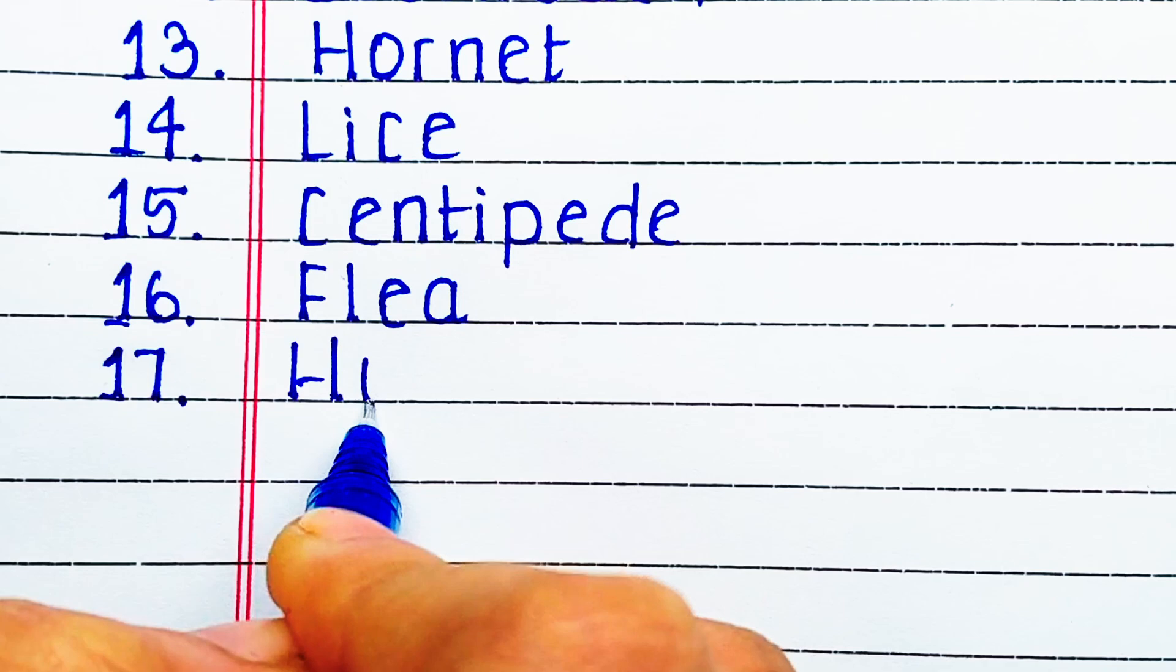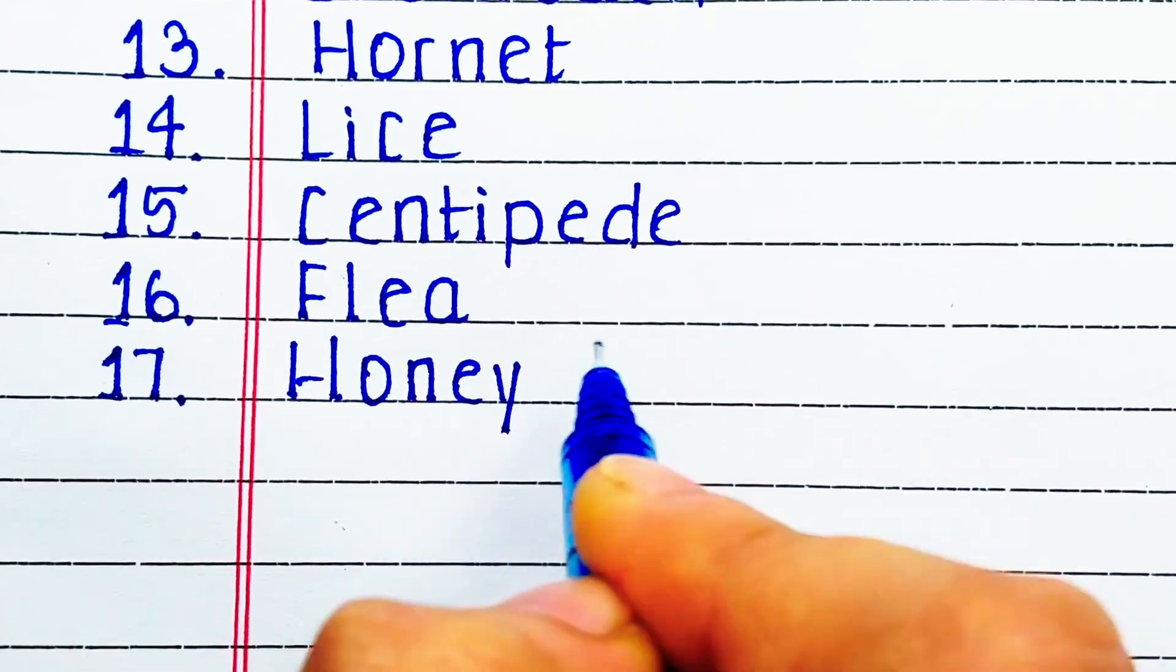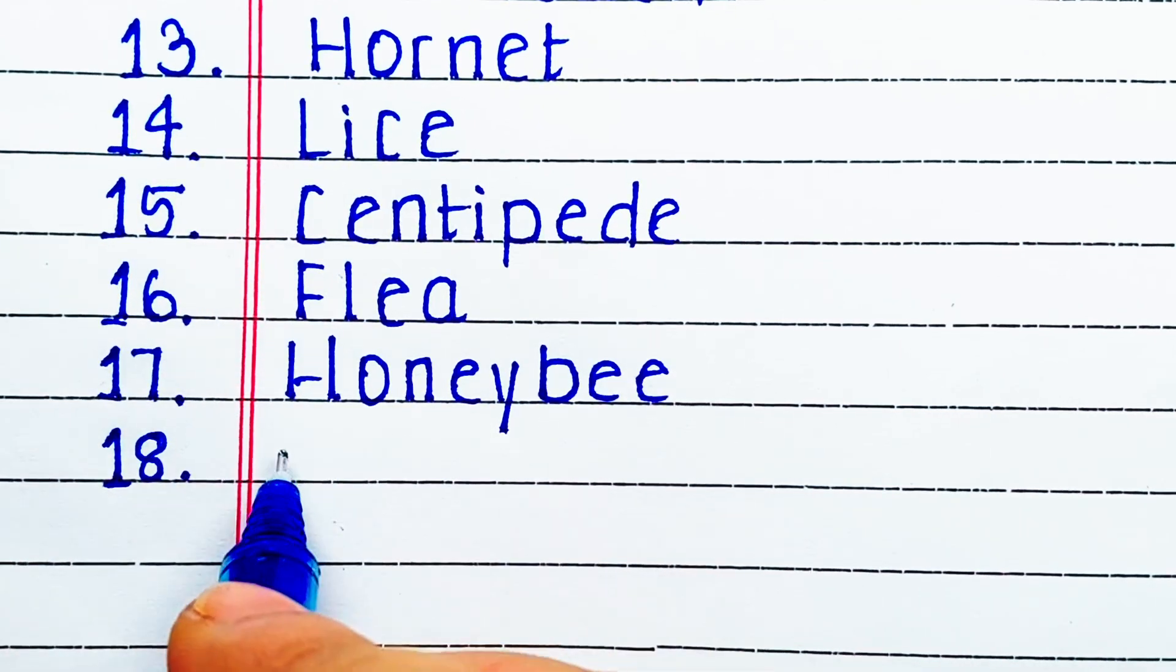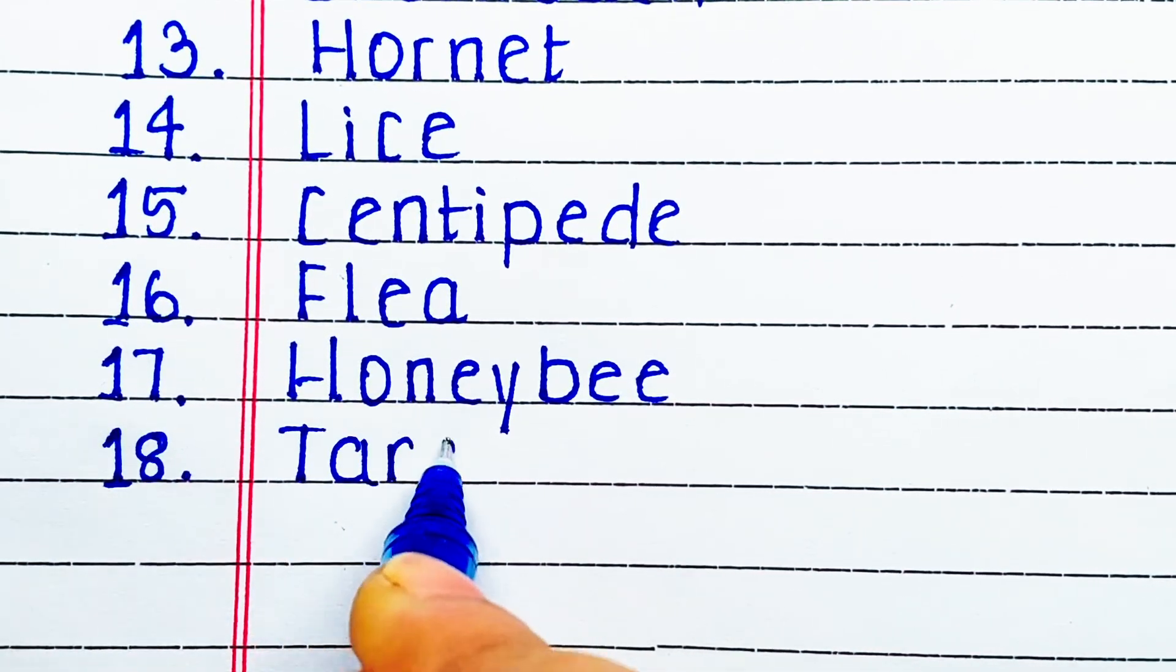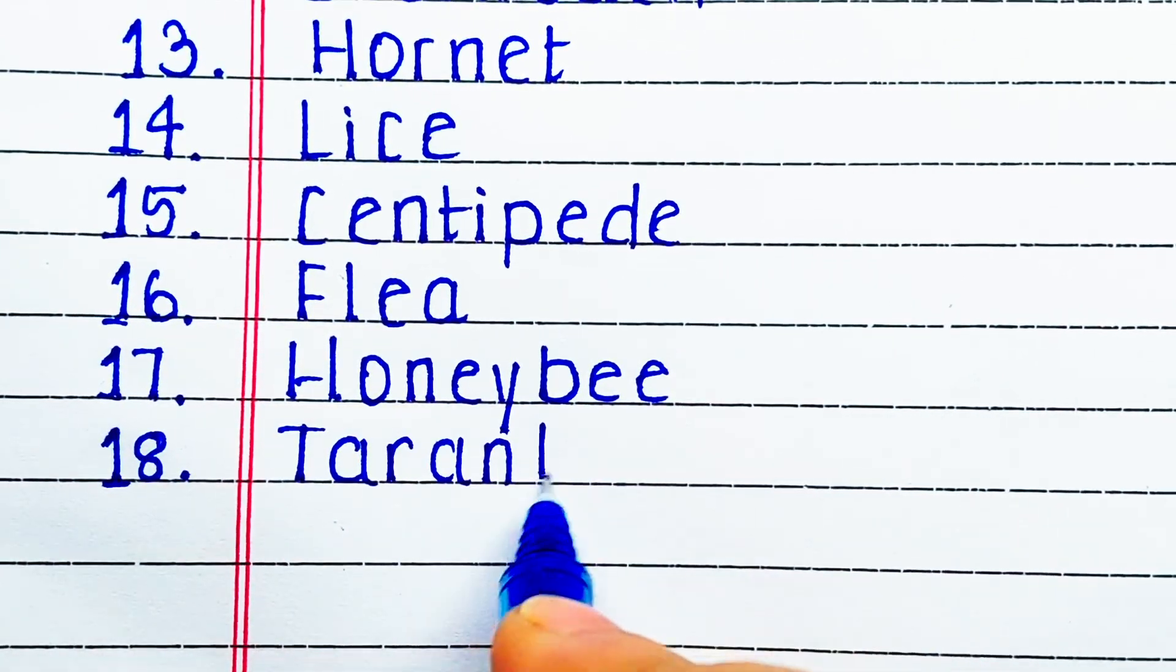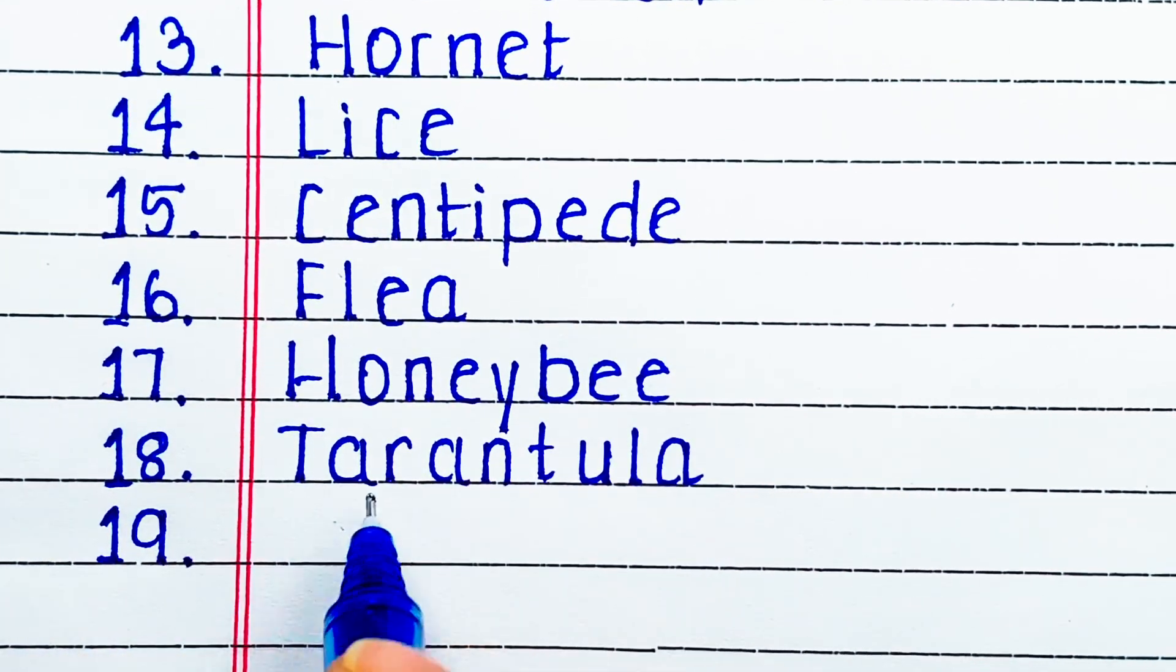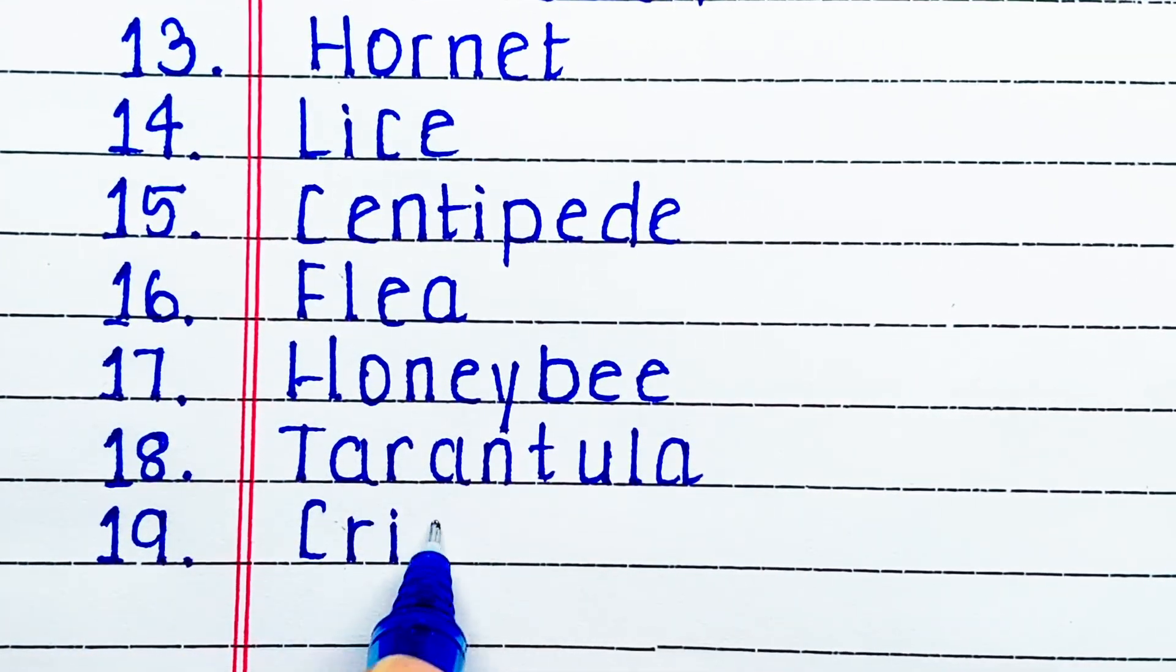Next F-L-E-A, flea. Next H-O-N-E-Y-B-E-E, honeybee. Next T-A-R-A-N-T-U-L-A, tarantula. Next is C-R-I-C-K-E-T, cricket.